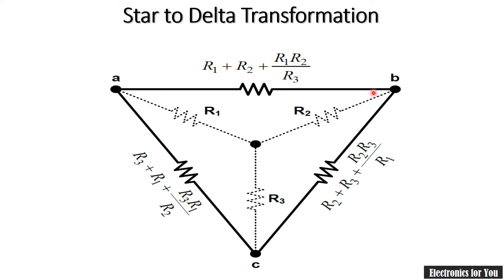In between A and B, R1 and R2 are directly connected to A and B respectively, so their addition plus their multiplication in the numerator divided by the third resistance. Similarly, in between B and C it is R2 plus R3 plus R2 into R3 divided by third resistance R1. And for A to C it is addition of those two plus multiplication of those two again divided by third resistance R2. This is the equivalent formula.